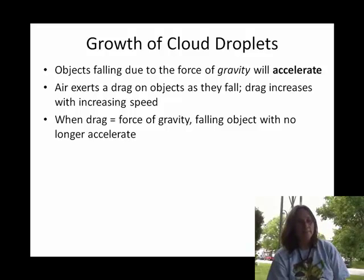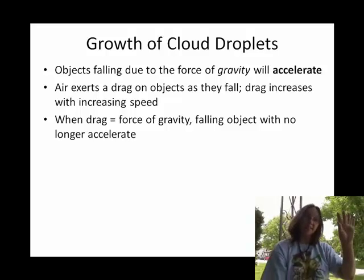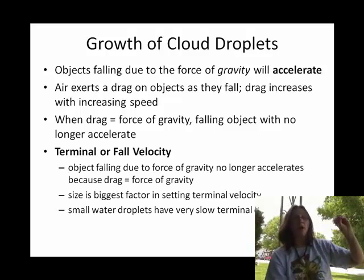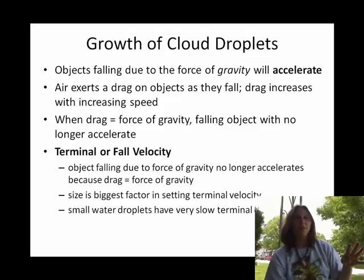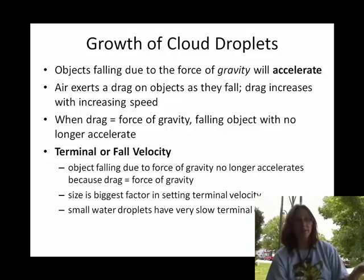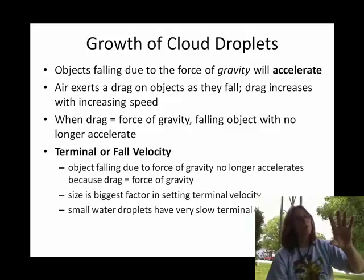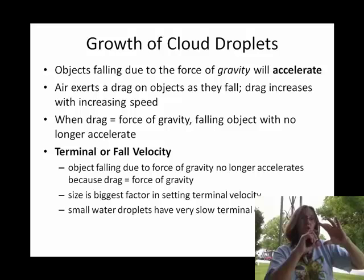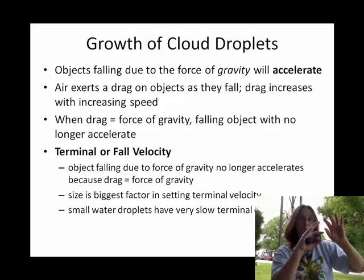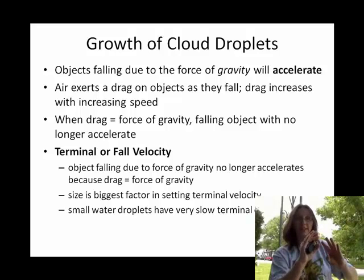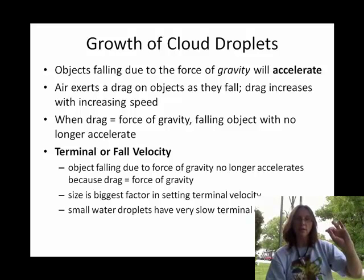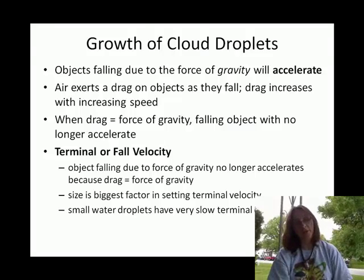Everything accelerates at that rate toward Earth's surface. But here's the deal — depending upon the size of the liquid particle, they will reach what we call a terminal velocity. Terminal velocity basically means it will stop accelerating. Objects can reach a terminal velocity. And as I showed a few slides ago in Chapter 5, within a cloud there is an assortment of particle sizes — liquid particle sizes. The lighter and smaller ones end up with a slower terminal velocity; the heavier they are, they have a faster terminal velocity.